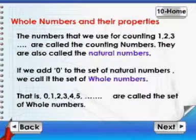Whole numbers and their properties. The numbers that we use for counting 1, 2, 3, etc. are called the counting numbers. They are also called natural numbers. If we add 0 to the set of natural numbers, we call it the set of whole numbers. That is, 0, 1, 2, 3, 4, 5, etc. are called the set of whole numbers.